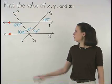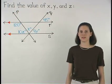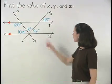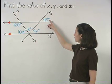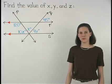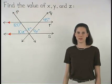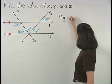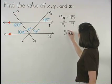In this problem, we're given a diagram and we're asked to find the value of x, y, and z. Notice that lines r and s are parallel, and using the transversal q, we can see that the angle marked as 9y and the angle marked as 45 are corresponding angles. Since we know that if two parallel lines are cut by a transversal, then corresponding angles are congruent, we can set up the equation 9y equals 45. Dividing both sides by 9, we find that y equals 5.